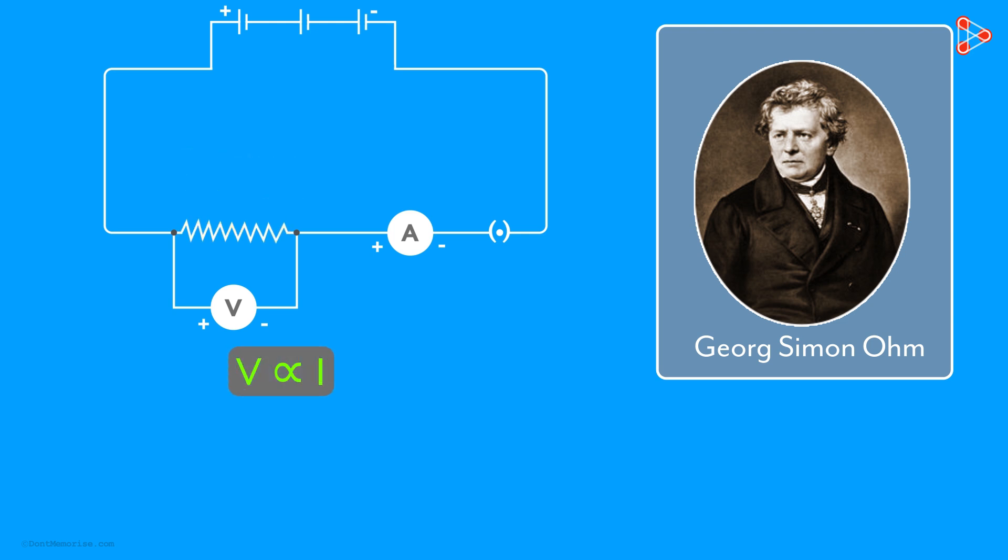If V is directly proportional to I, it also means that V over I is constant. And that constant is nothing but R or the resistance.